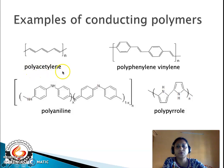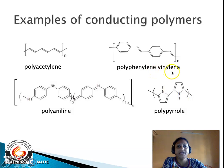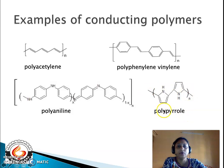In polyacetylene we can clearly see the single and double bond in conjugation. In polyphenylene vinylene, again the same thing can be seen. In polyaniline and polypyrrole also we can see the same — single and double bonds in conjugation. These are the examples of intrinsically conducting polymers.